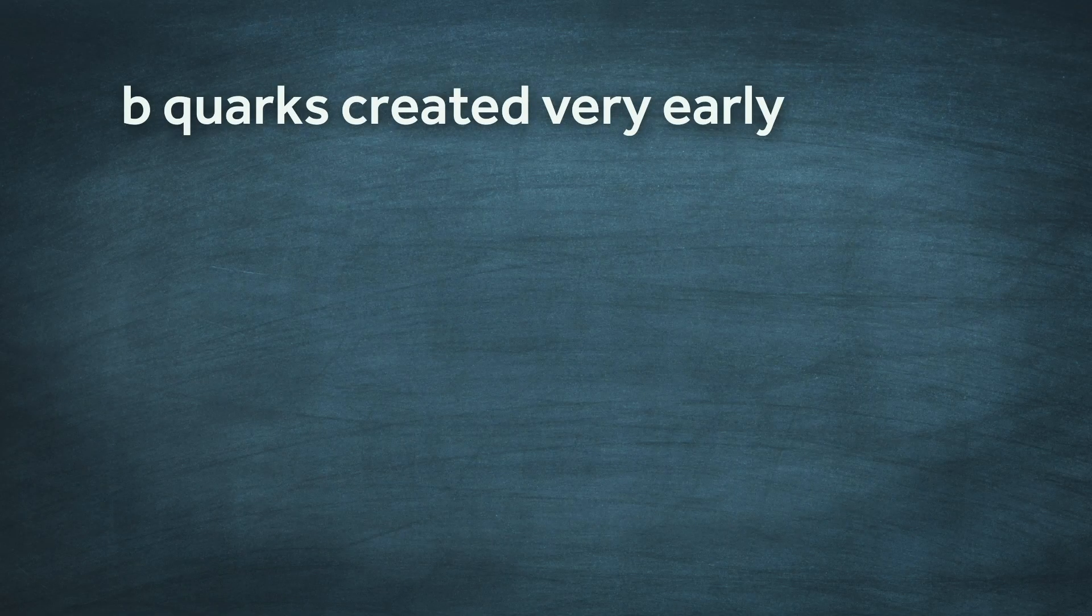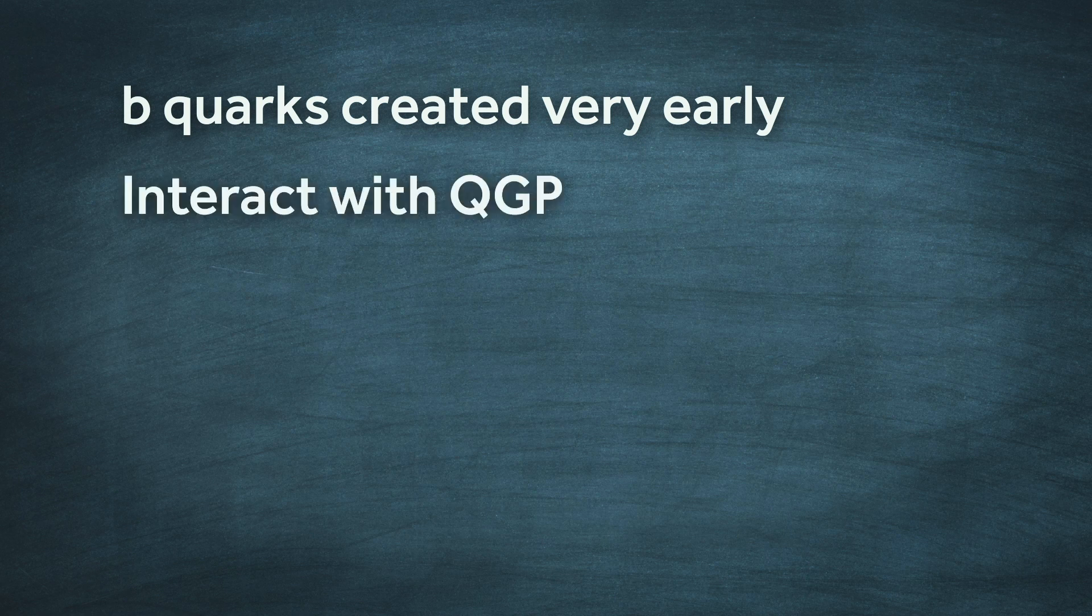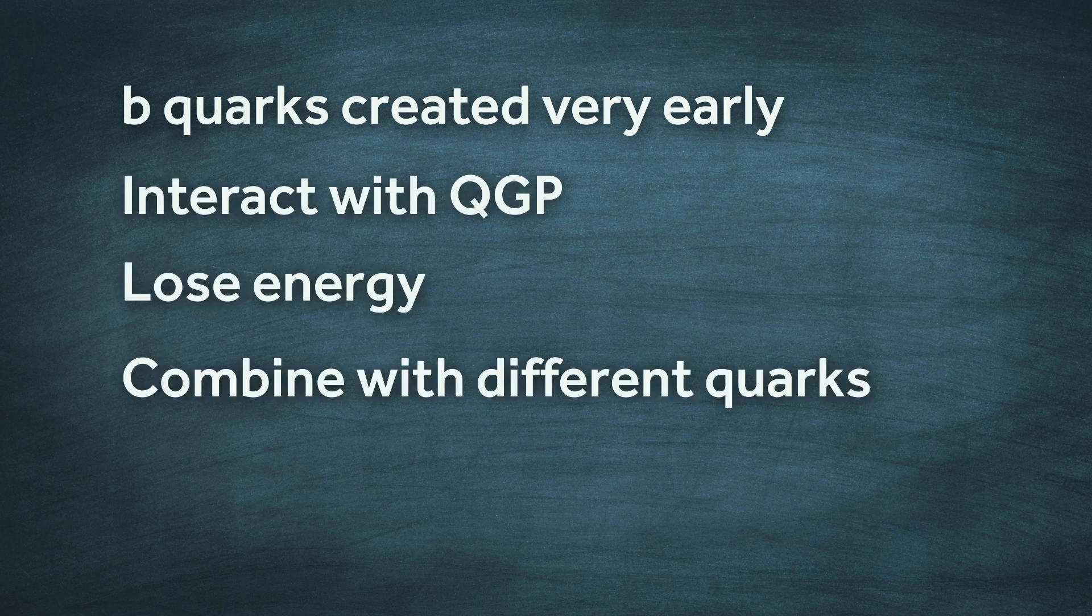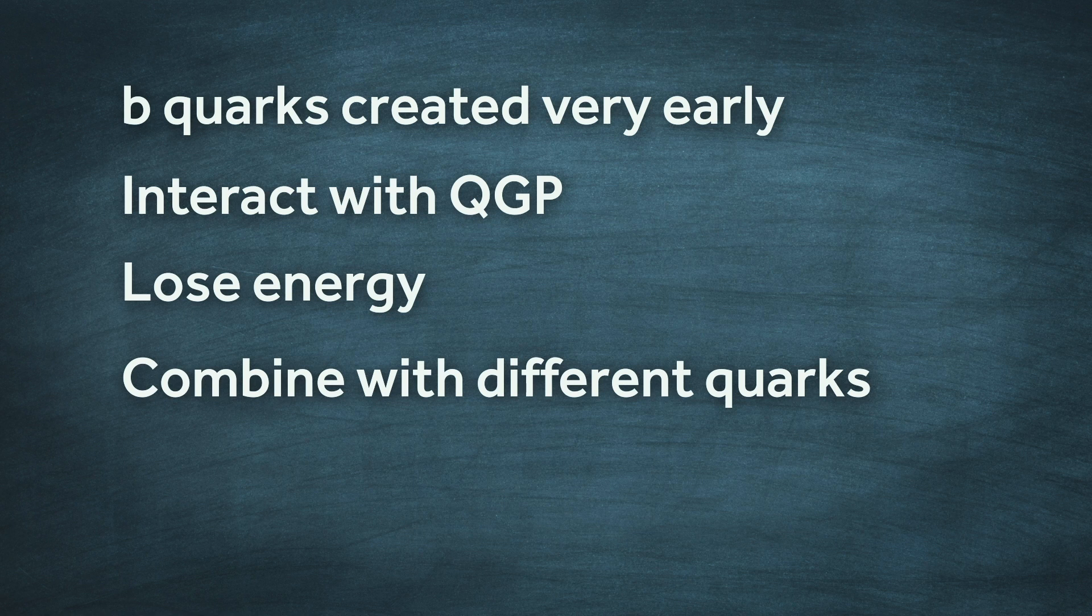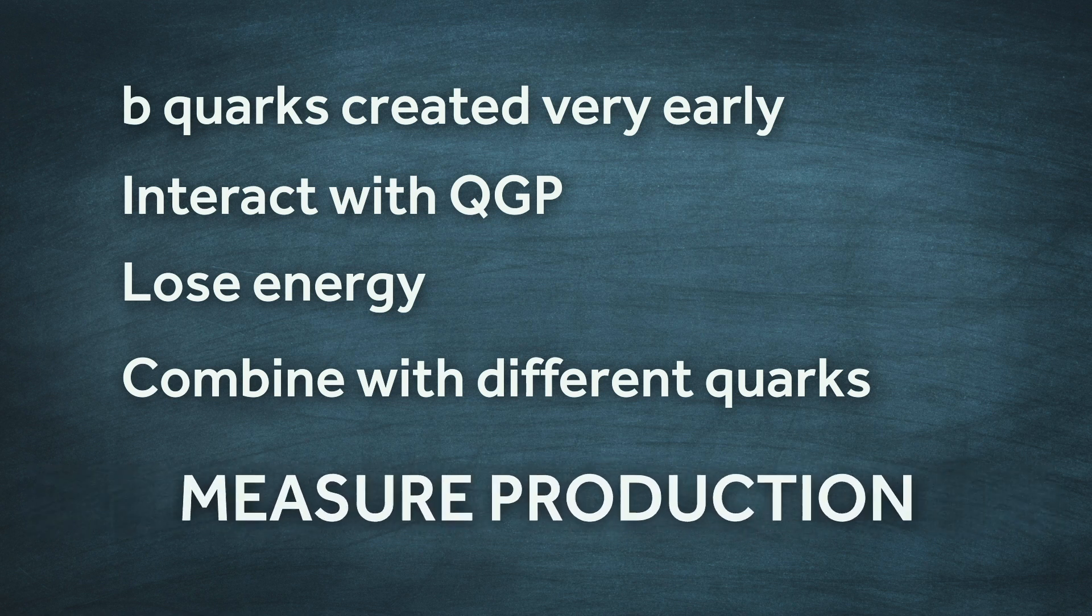Recapping, B quarks are created very early in the collision, interact with the QGP, lose energy, and then combine with different quarks, forming B mesons. Our goal is to measure how many of them are produced.